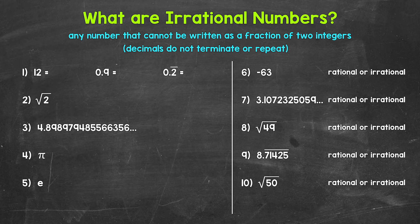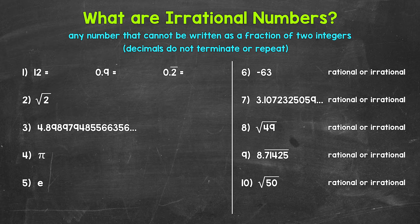Taking a look at number 1, we have 12, 9 tenths, and 0.2 repeating. These are all rational numbers. We can write them as fractions — fractions of two integers. And the decimal form of a rational number either terminates or repeats.